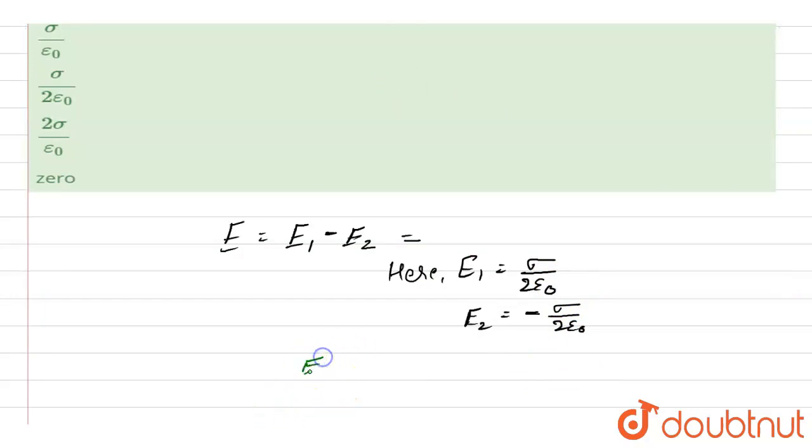E1 will be equal to sigma upon 2 epsilon naught and the value of E2 will be minus sigma upon 2 epsilon naught because the charge densities are plus sigma and minus sigma. So now